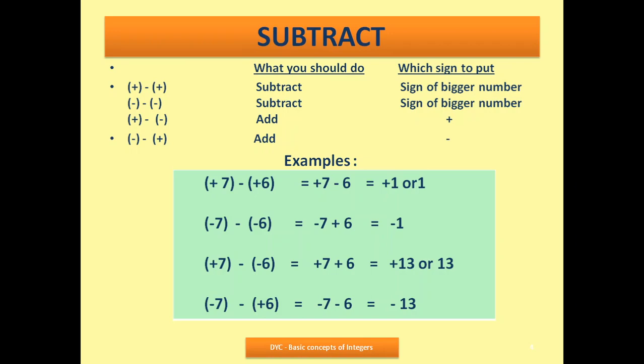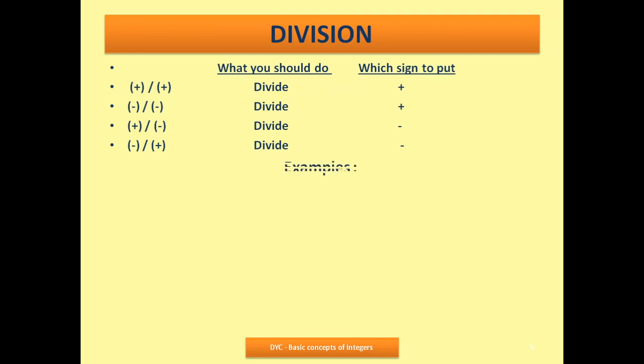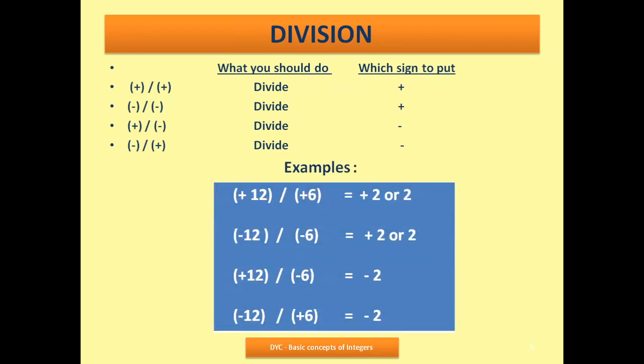You need to do lots and lots of practice to understand these rules better. Now, the division rules: simply we divide. For example, plus 12 divided by plus 6 — 12 divided by 6 is 2. Both are plus, so the answer is 2. No danger.